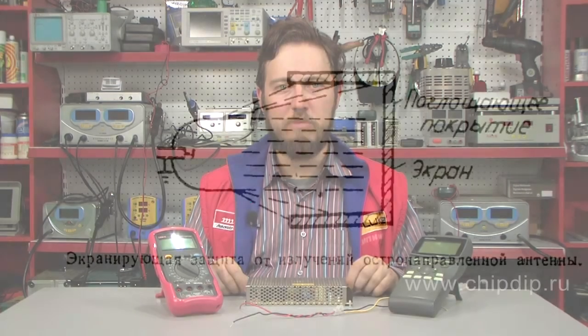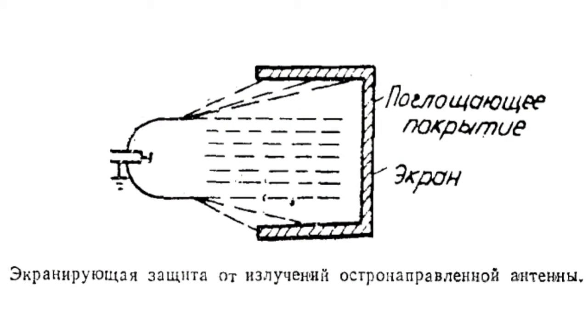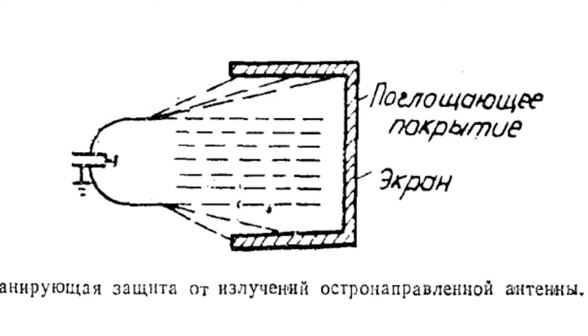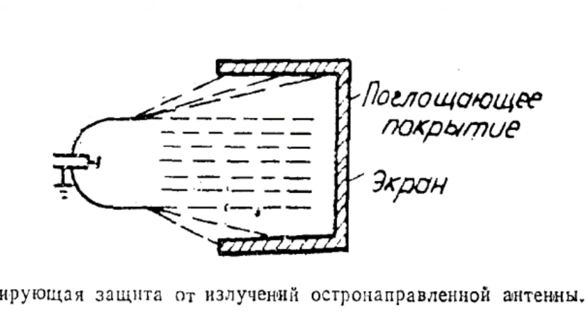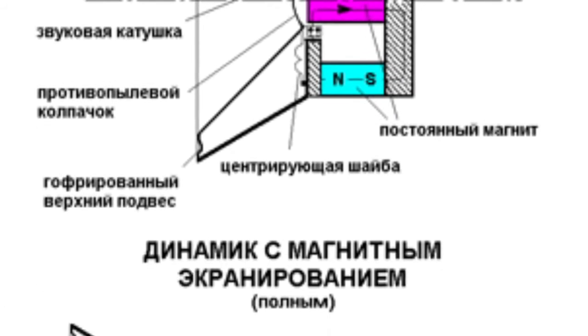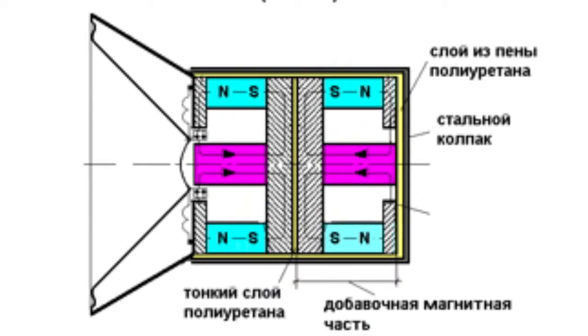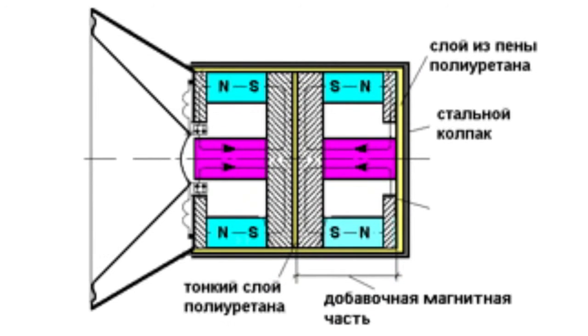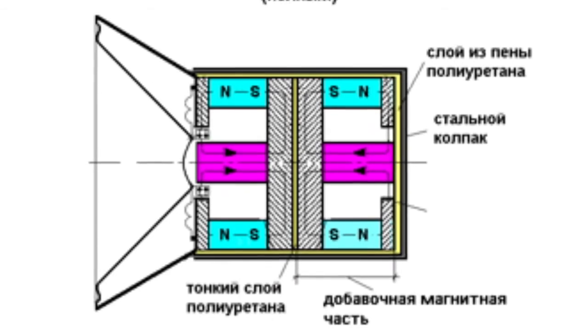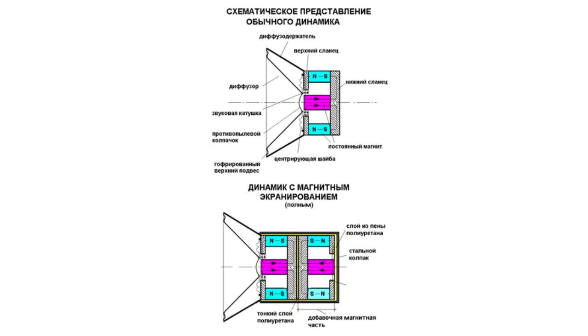A conductive screen is an effective solution and there are two reasons for this. First of all, it absorbs energy as the waves pass through a conducting medium. Secondly, energy is reflected at the border of two mediums. Both effects depend on the frequency as well as on the material of the screen.